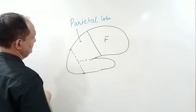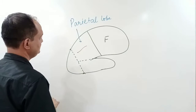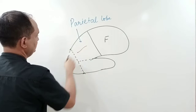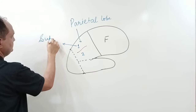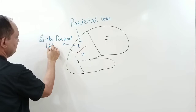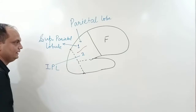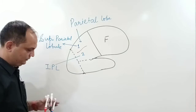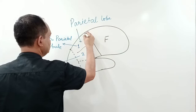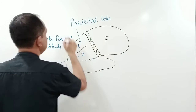Within the parietal lobe there is a sulcus known as the intraparietal sulcus, which divides the parietal lobe into two parts. The upper part is known as the superior parietal lobule and the lower part is known as the inferior parietal lobule. So the parietal lobe in its posterior part contains the superior parietal lobule and the inferior parietal lobule.